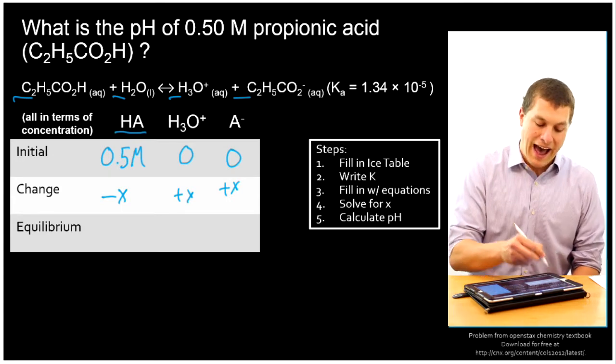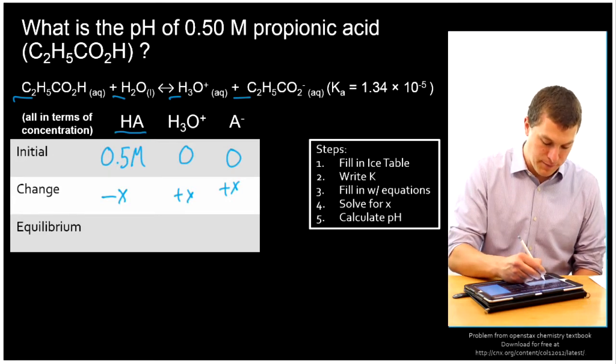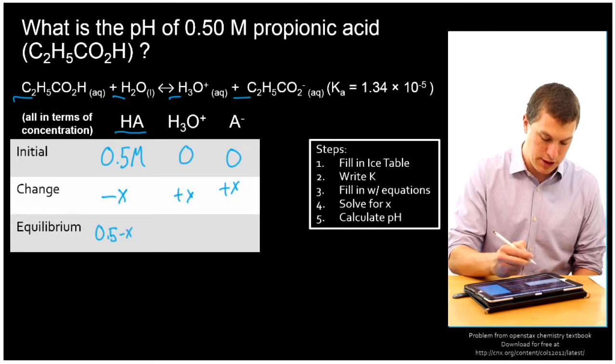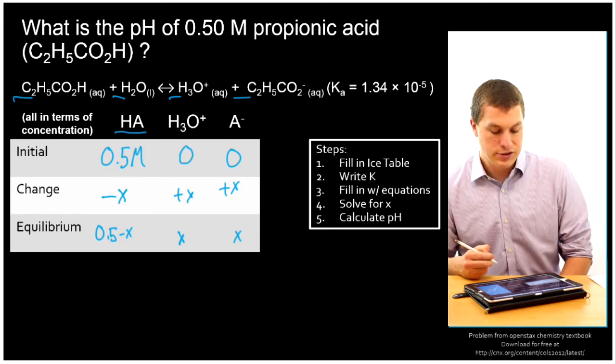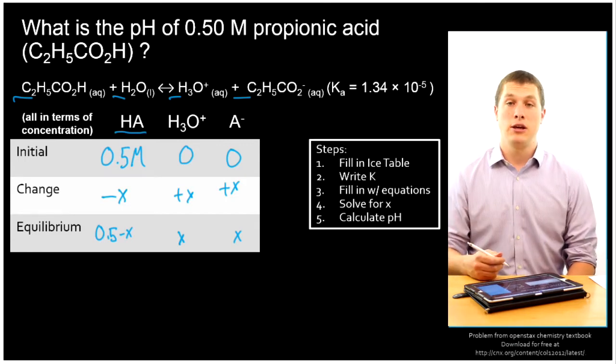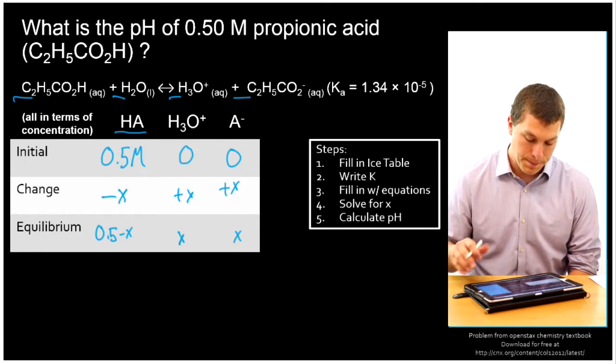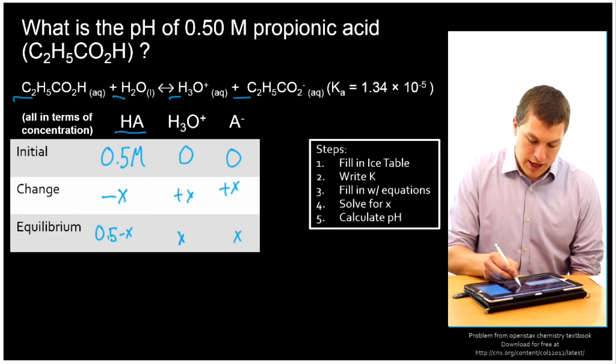So at equilibrium, we add the initial to the change. So we get 0.5 minus X to determine the equilibrium concentration there. Zero plus X just gives us X, and zero plus X just gives us X there. So that's our ice table. Looks just like equilibrium calculations you have done before. And then after we fill in our ice table, we're going to write K.